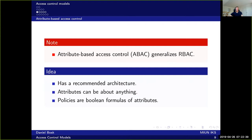Next, we have attribute-based access control, which generalizes role-based access control. This model uses attributes to specify the policy. This also makes it simpler than identity-based access control, since you don't have to manage identities — you simply care about attributes, which is more general, and then you can specify quite fine-grained policies about what is allowed and what is not. The policy in attribute-based access control is basically Boolean formulas of attributes, and if the criteria on the attributes are true, then the reference monitor will allow the requested operation and the subject may proceed.